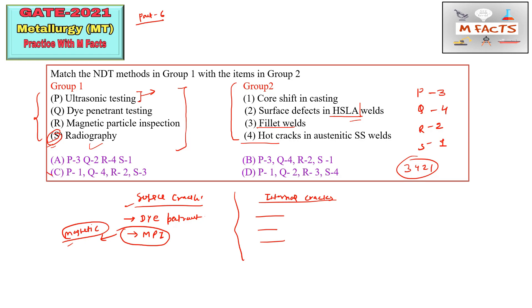C option is wrong, D option is wrong. Option A has code 3, 2, 4, 1 — this is also wrong. B is correct. Try to remember this classification of surface versus internal NDT techniques, then find the unique one in the options.